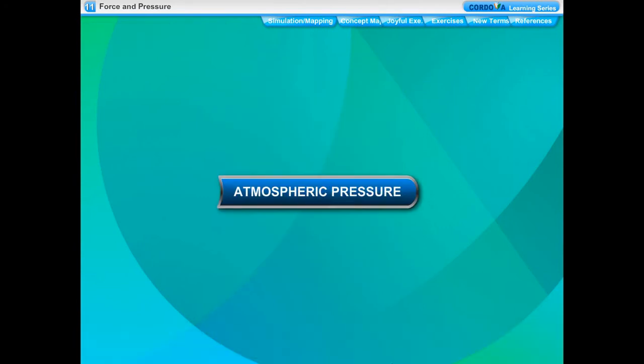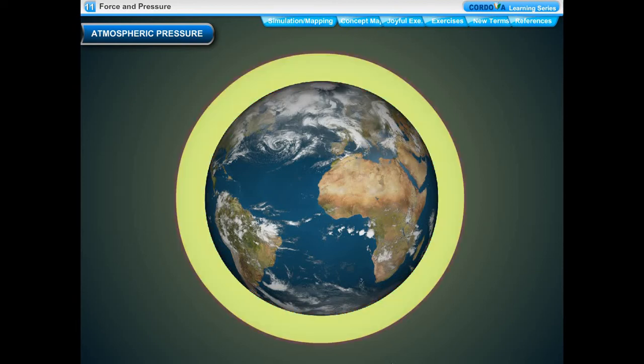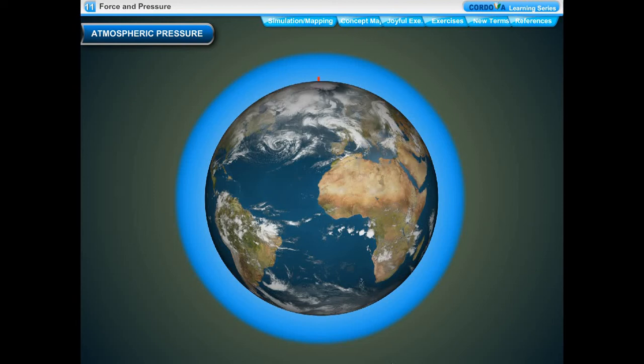Atmospheric pressure. We live on the earth and there is a lot of air around us. The layer of air surrounding our earth is called atmosphere. The air in our atmosphere extends up to a height of about 300 kilometers above the surface of the earth.